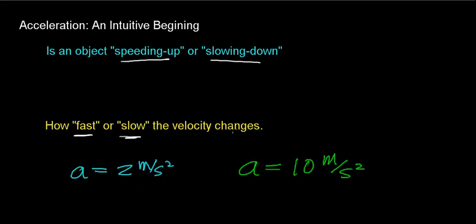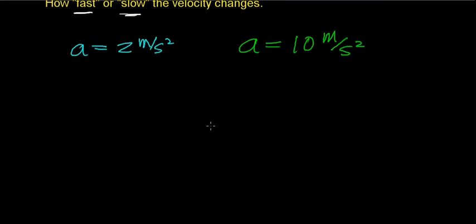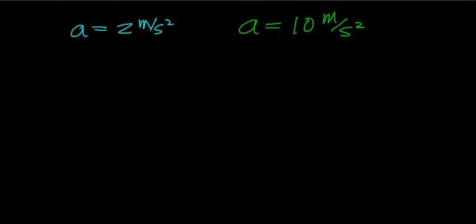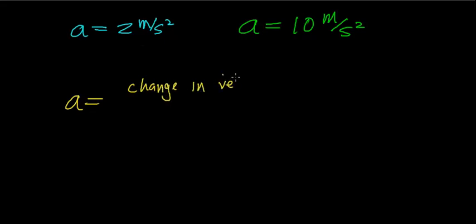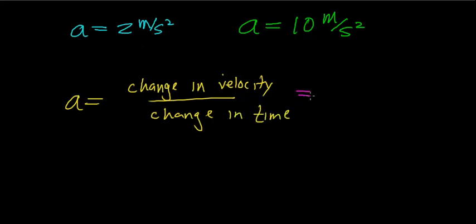What I'd like to do next is to define what acceleration is in a more formal way and explain where the units of meters per second squared come from. The definition of acceleration is how fast the velocity changes — that is, a change in velocity per change in time. Another way to write this is the final velocity minus the initial velocity, divided by the final time minus the initial time.